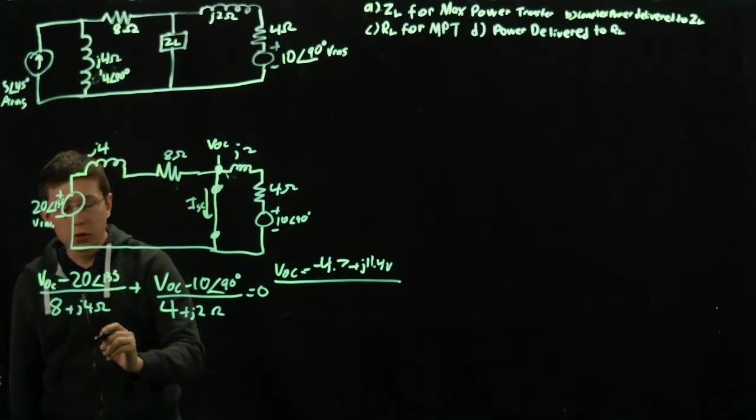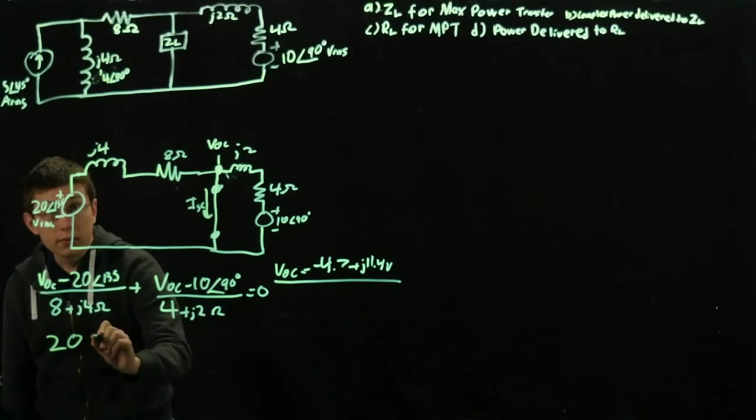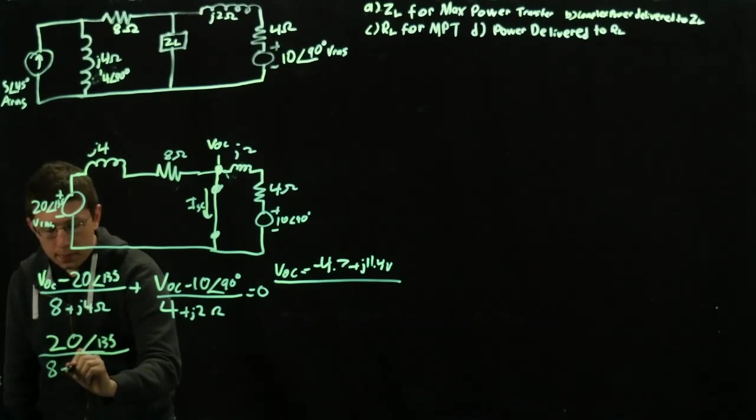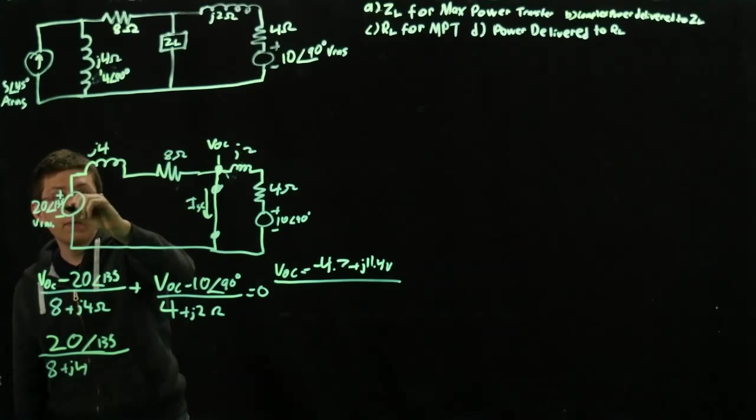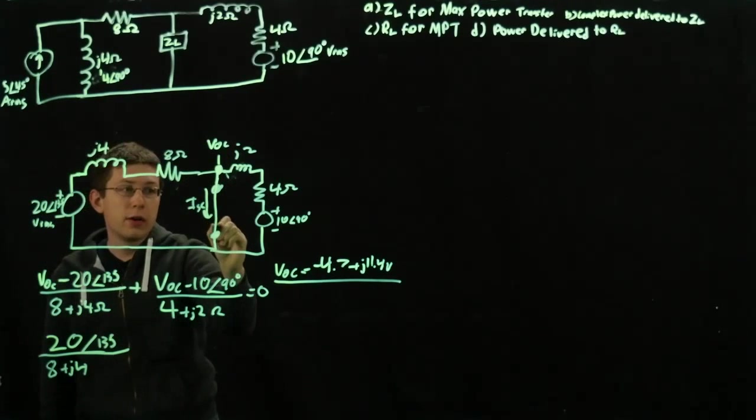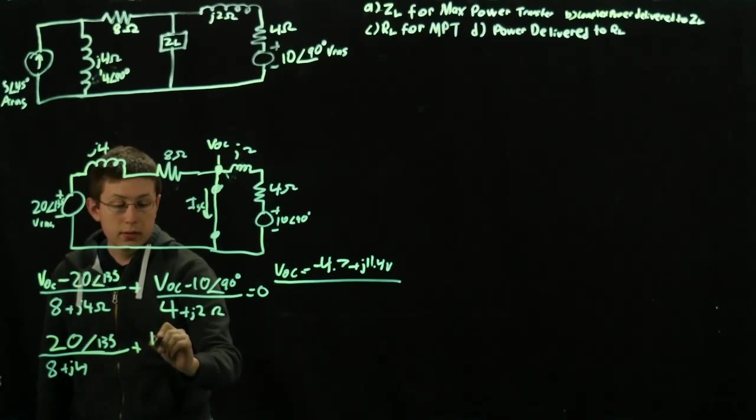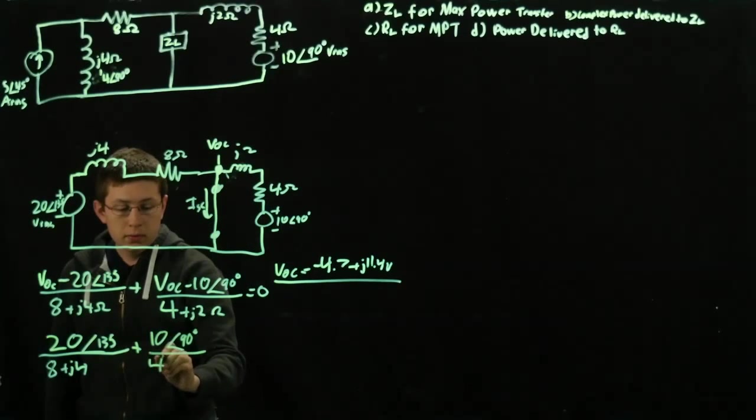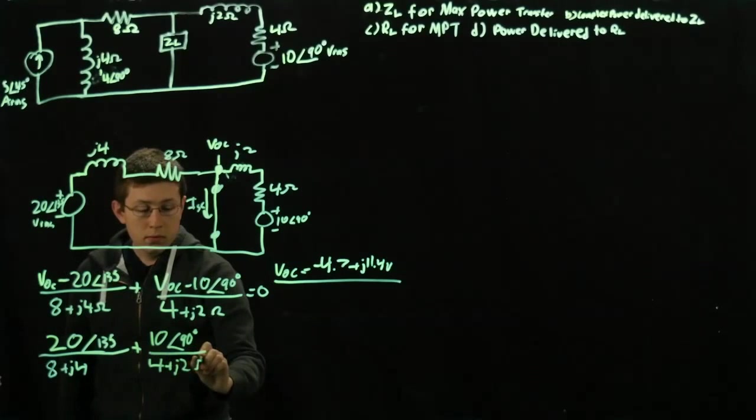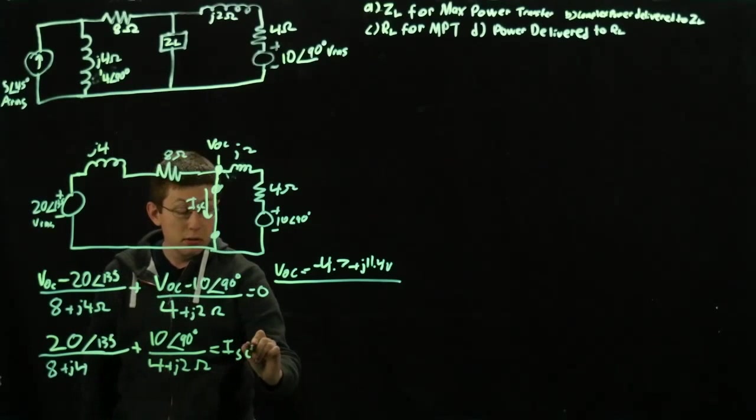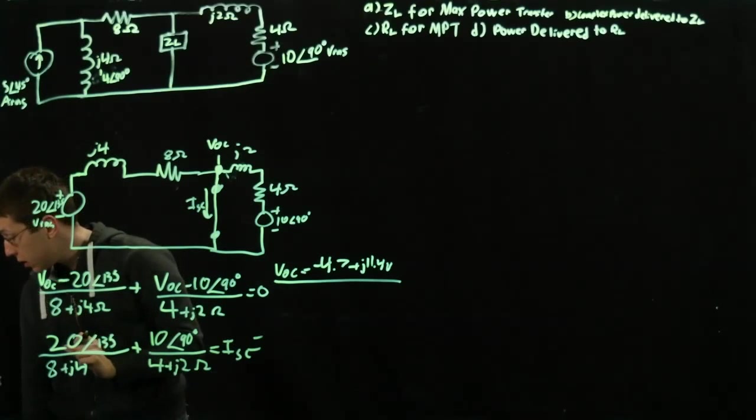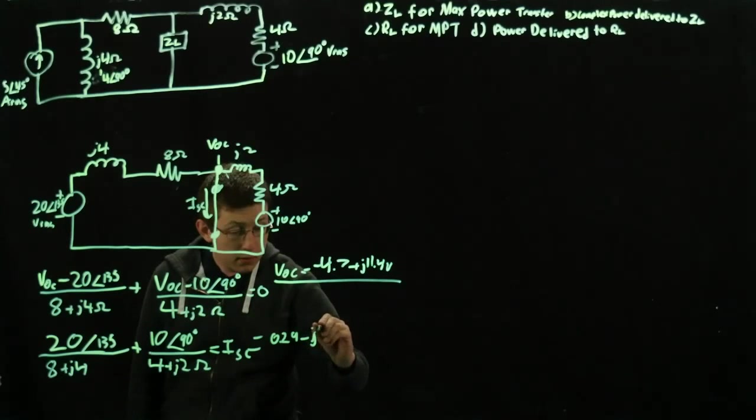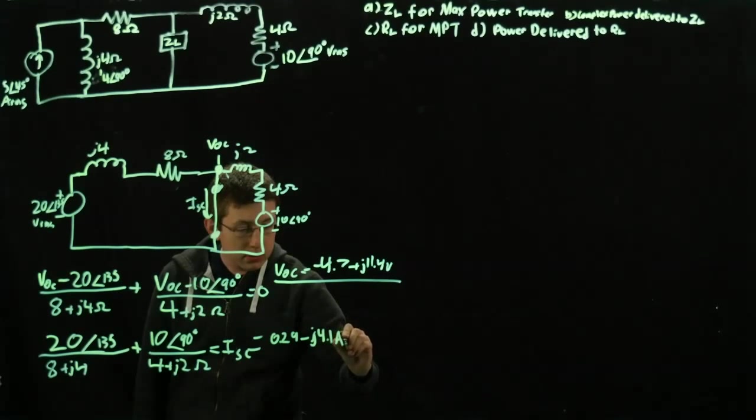So 20 at 135 over 8 plus J4. This is the current caused by this voltage source flowing down here. Now we're going to do this one, plus 10 at 90 degrees over 4 plus J2. That gives us our ISC, our short circuit, and that is 0.29 plus J4.1 amps RMS.